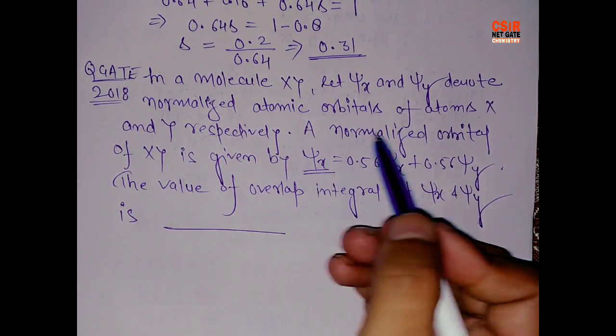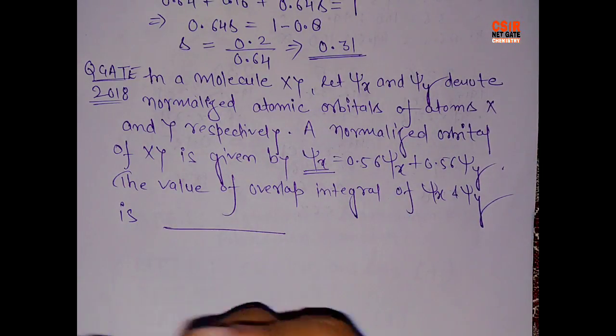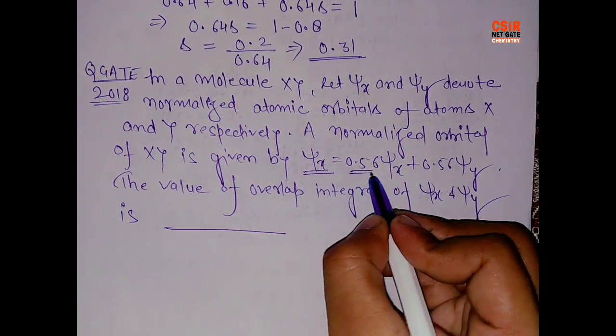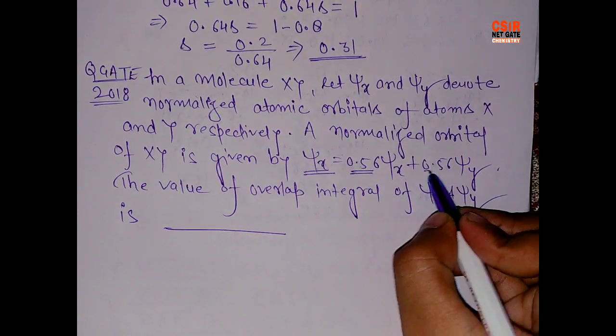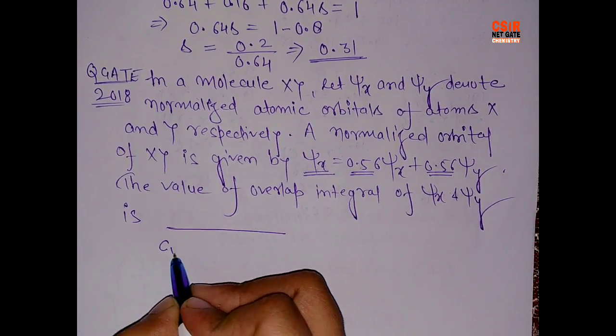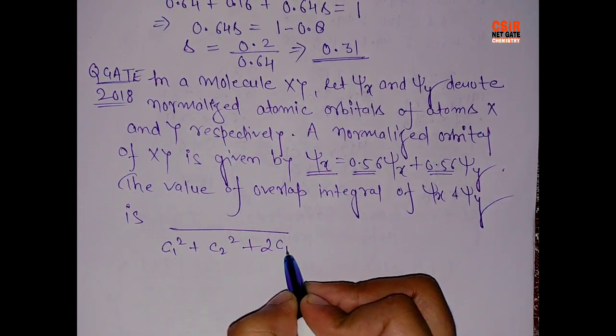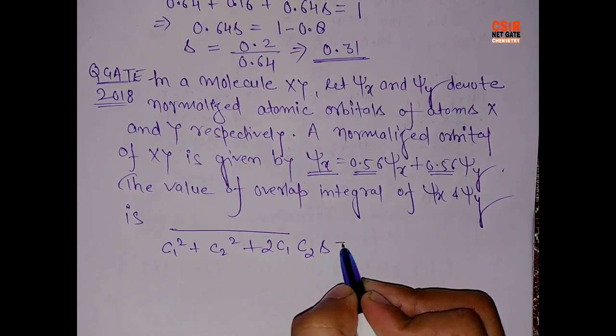So again what we have to do is just apply the formula. This is 0.56 c1 and this is 0.56 c2. So write again: c1 square plus c2 square plus 2c1c2s equals to 1.